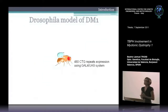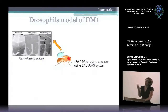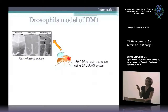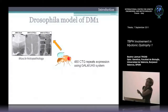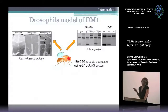In our laboratory, we have been working for several years generating a fly model of DM1, expressing 480 CTG repeats in several tissues using the GAL4-UAS system. When we express the repeat using the myosin heavy chain promoter in the indirect flight muscles of the fly, we obtain some degree of muscle degeneration similar to that seen in patients. These are transversal sections of the thoraces of adult flies — the long expansions of 480 show smaller fibers with many defects, while the short expansions do not show this phenotype. These flies also show mis-splicing defects in some transcripts like troponin T.